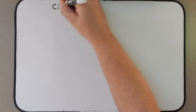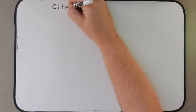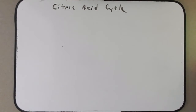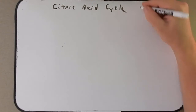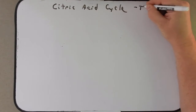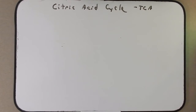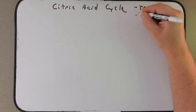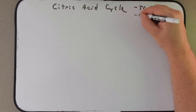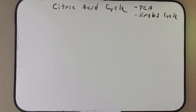Hello and welcome everyone to this podcast for cell biology. In this podcast we're going to talk about the citric acid cycle and towards the end we'll also talk about a special pathway called gluconeogenesis. You might have also heard the citric acid cycle called the TCA cycle for tricarboxylic acid cycle, and you might have also heard it as the Krebs cycle. It's all the same cycle.